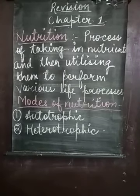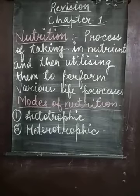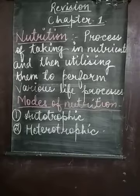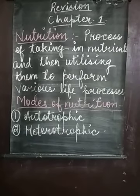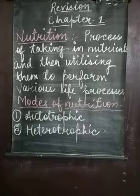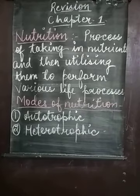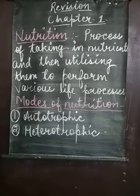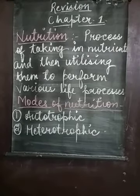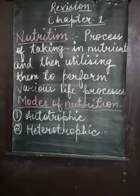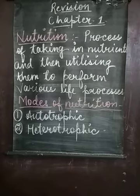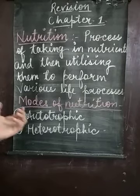The nutrients present in food items are carbohydrates, fats, proteins, vitamins, minerals, etc. Now, depending on the process involved in obtaining and utilizing food, different organisms have different modes of nutrition. Some organisms get nutrition by one method and others by a different method. These are the modes of nutrition.